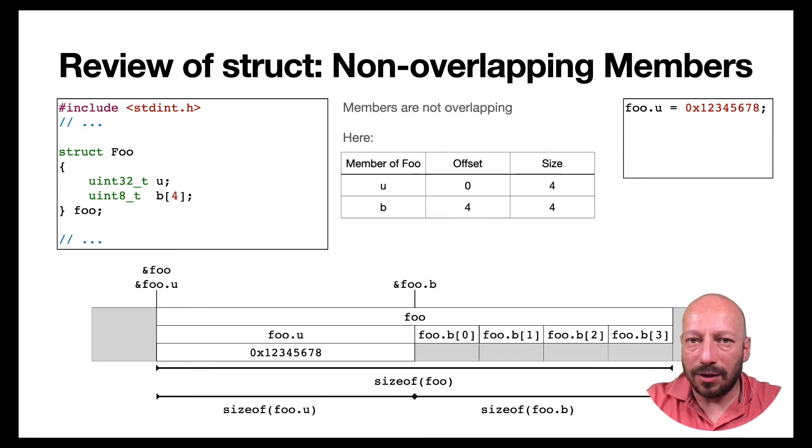Now, if you write something to this second member, element by element, for example, then you actually can exactly know to what memory cell you write what byte. Okay, and now I want to use this for motivating unions next.